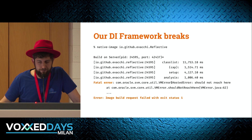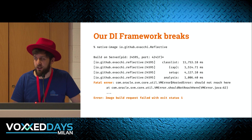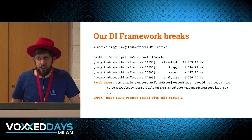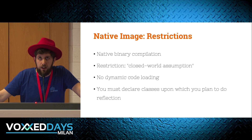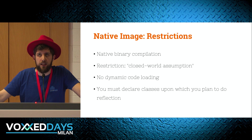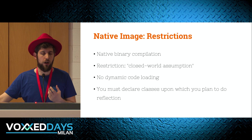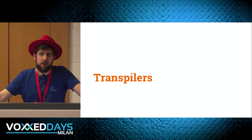Nope — we can't, because there are a few limitations with the native image compiler. Our previous example breaks. You don't need to look at the stack trace — the point is we're doing reflection there, and unrestricted reflection is disallowed. There's a closed-world assumption: you have to know upfront all the classes you're going to reflect upon and declare them to the compiler. So at this point you might ask: what does this have to do with the transpiler in the title?